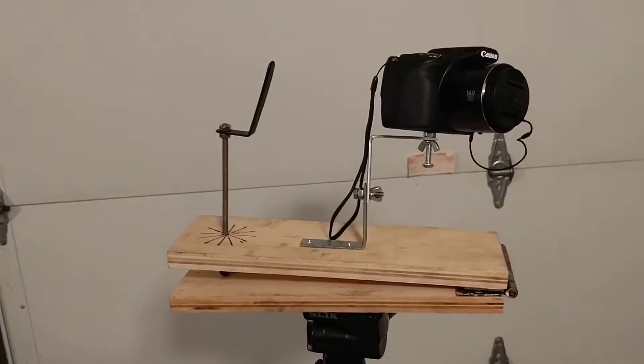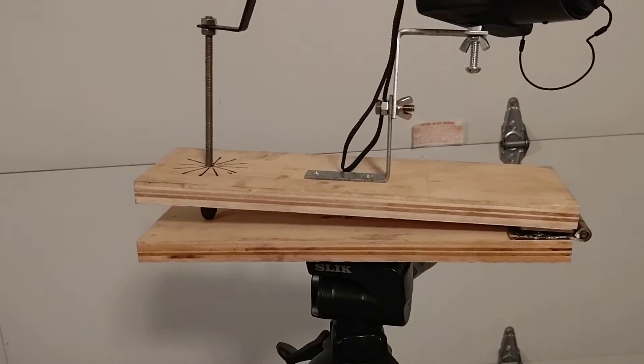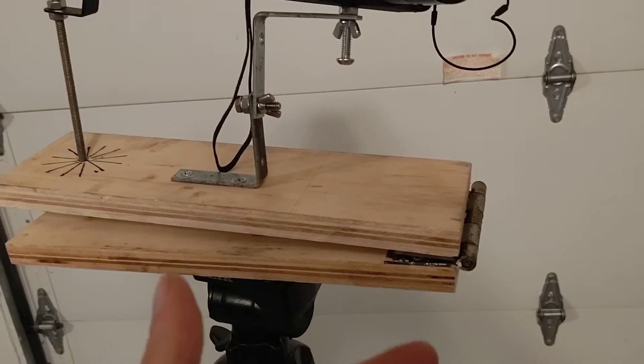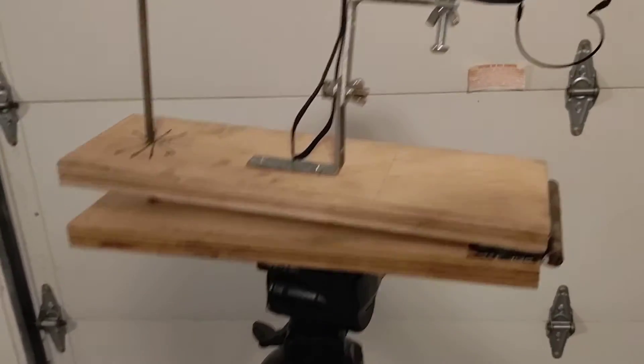A very simple way to do that is to build this barn door tracker, which is just a barn door hinge, a typical door hinge, and two pieces of wood.